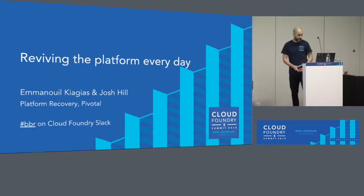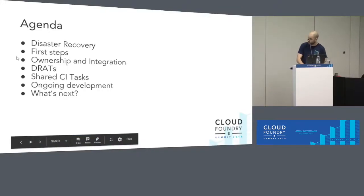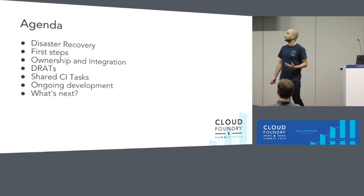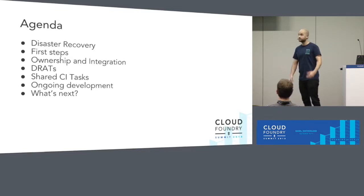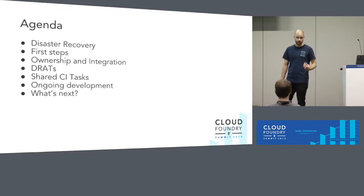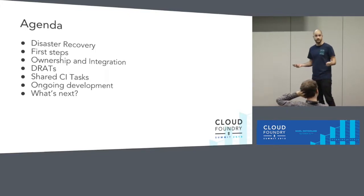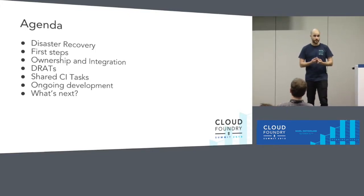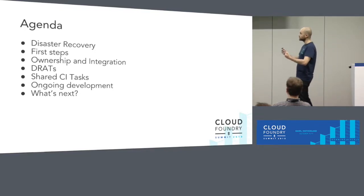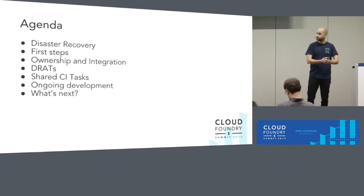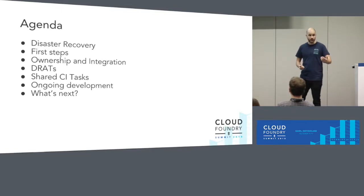Let's look at our agenda for today. First, we're going to talk about what disaster recovery is and how we test it, and what the challenge behind it is. Then we'll talk about the first steps we took as a team to address this problem, how we distributed the ownership, and how we integrated everything back together. That will bring into the discussion the DRATS framework — the Disaster Recovery Acceptance Test — which is the meaty part of the talk. Then we'll see how we created some shared CI tasks and talk about the ongoing development and next steps in our journey.